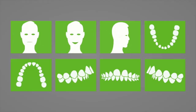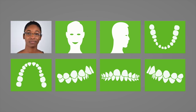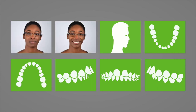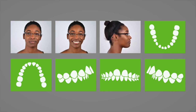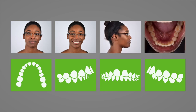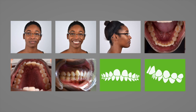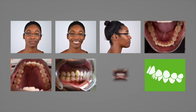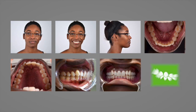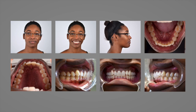We require photos from all eight angles recommended by the American Board of Orthodontics: full face with lips relaxed, full face smiling, profile facing right, lower occlusal, upper occlusal, right lateral view, front view, and left lateral view.